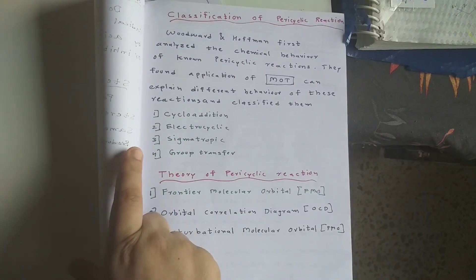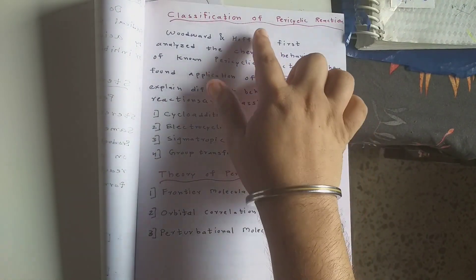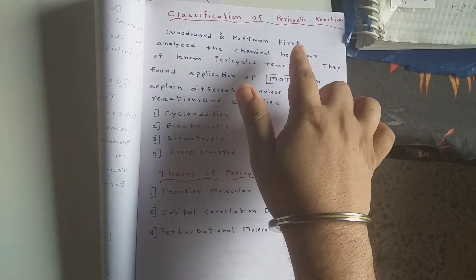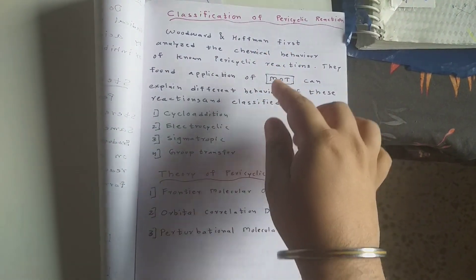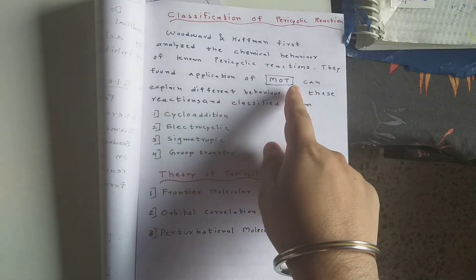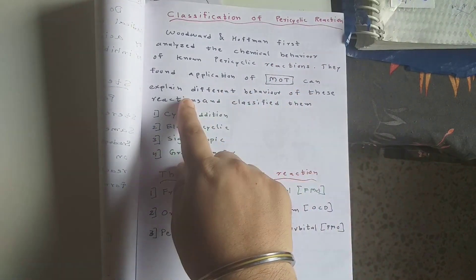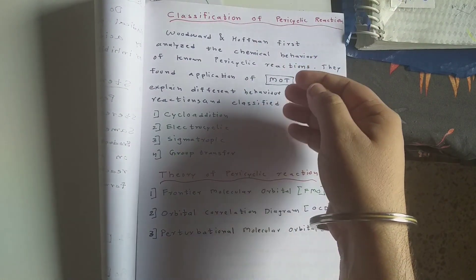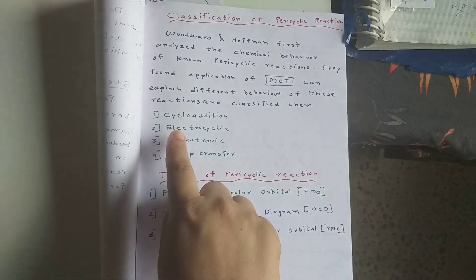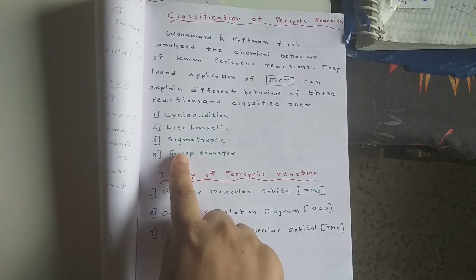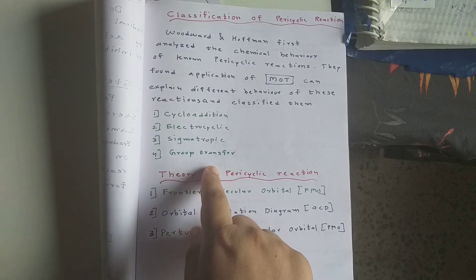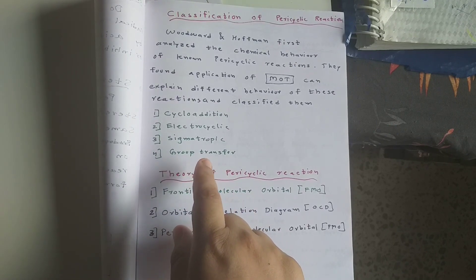Now we will discuss the classification of pericyclic reactions, which was done by Woodward and Hoffman. They analyzed the chemical behavior of pericyclic reactions and applied molecular orbital theory (MOT). They classified these reactions as: cycloaddition, electrocyclic, sigmatropic, and group transfer reactions. In modern theory, some additional classifications can also be found.